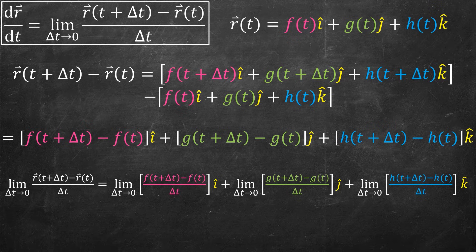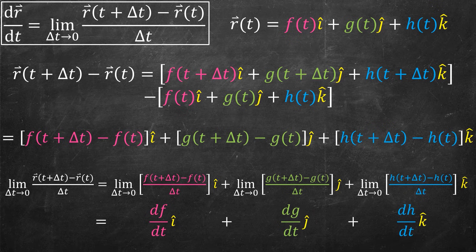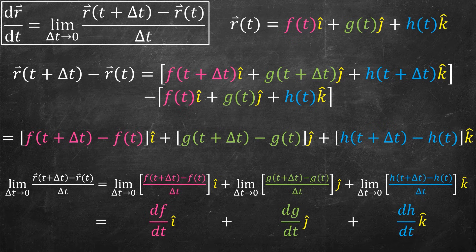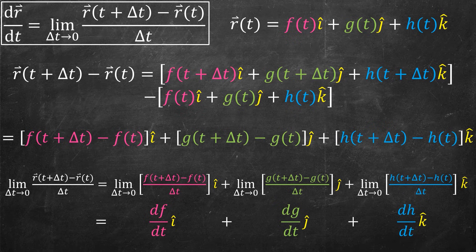And so this is just df dt in the i-hat direction, dg dt in the j-hat direction, and finally dh dt in the k-hat direction. So as long as my f, g, and h are differentiable, then I have my derivative split up in precisely this way.